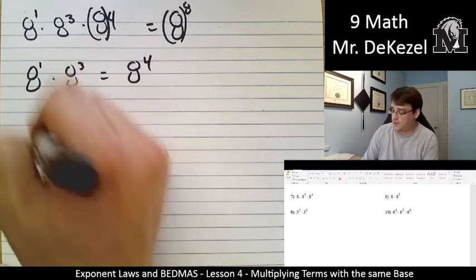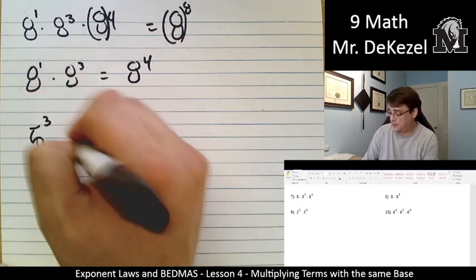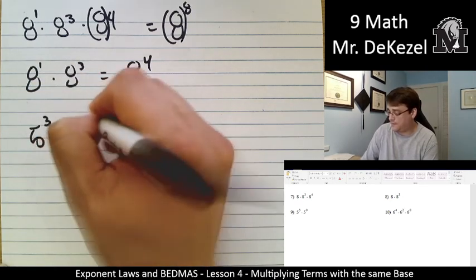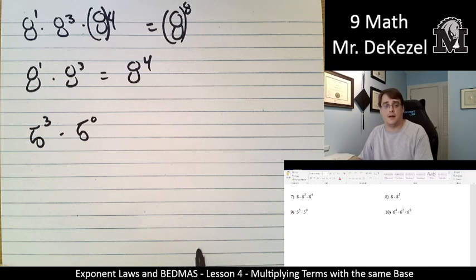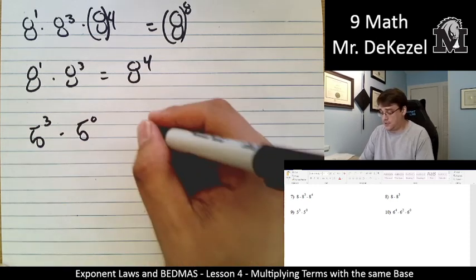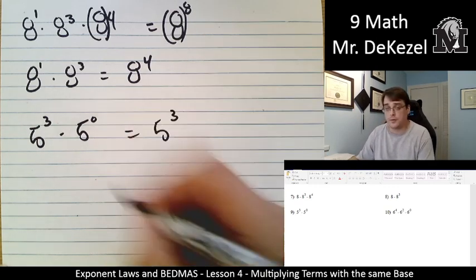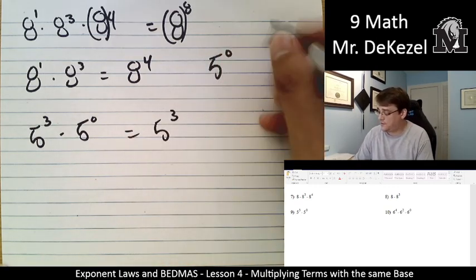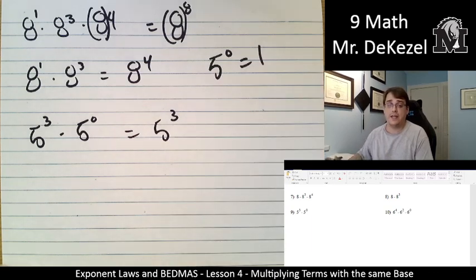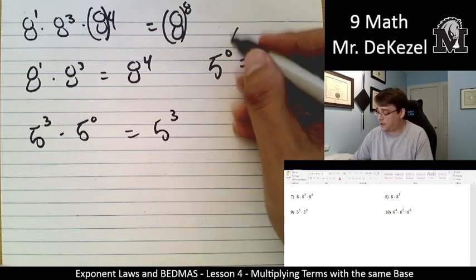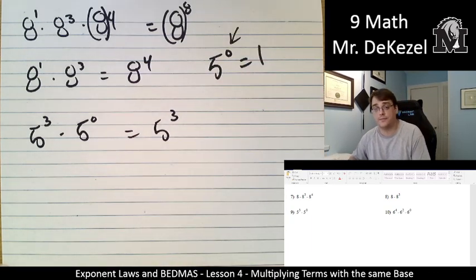As we move on, it's 5 to the power of 3 multiplied by 5 to the power of 0. 3 plus 0 is just 3, so this is 5 to the power of 3, and this also makes sense. As you probably know, 5 to the power of 0 is 1. Any number to the power of 0 is 1, okay? Any number, any number, any variable, anything.